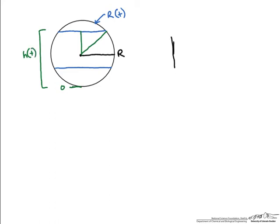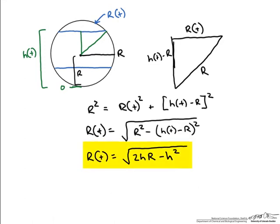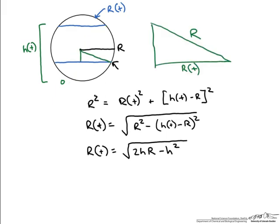Drawing a triangle from the center of the sphere, we identify the radius as a function of time, the sphere radius R, and the distance (h(t) minus R). Using the Pythagorean theorem: R squared equals the radius-as-a-function-of-time squared plus (h(t) minus R) squared. Isolating and simplifying, we get the radius as a function of time for the fluid level. For the lower fluid level case the triangle gives (R minus h(t)), but since that term is squared it yields the same result.